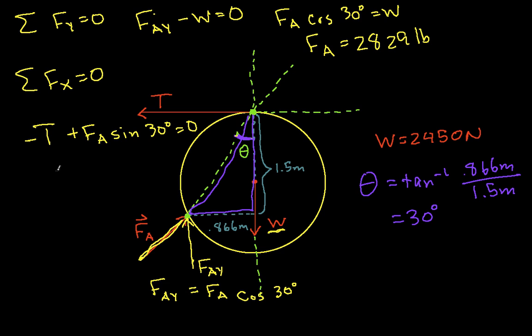From this I know FA, it's given by this value. I know the sine of 30 degrees, it actually turns out to be a half. And then to the nearest unit, I've got T is equal to 1,414 pounds.